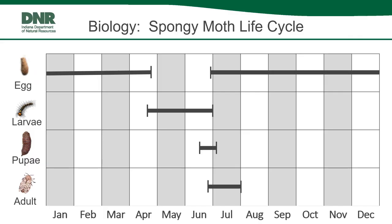Now that we know a little bit about where Spongy Moth came from, let's talk about its biology. Spongy Moth has a typical moth life cycle with four distinct stages: eggs, larva or caterpillar, pupa, and adult. Let's look at each stage a little closer.